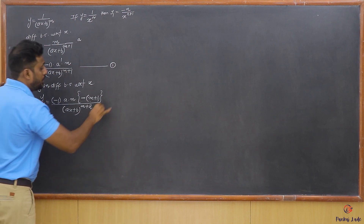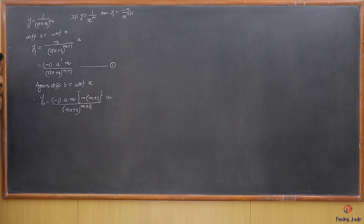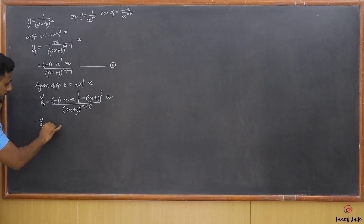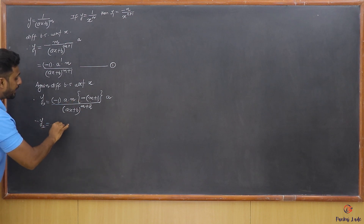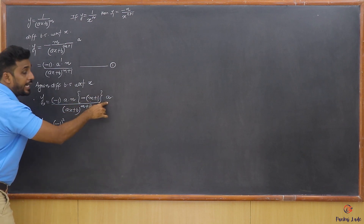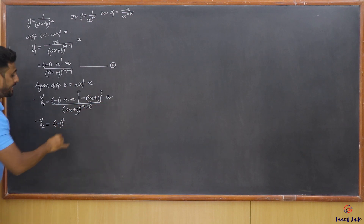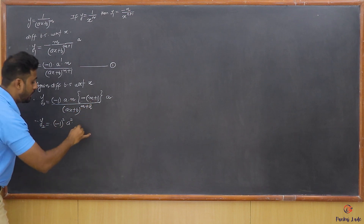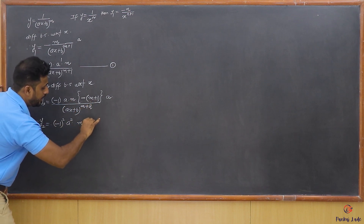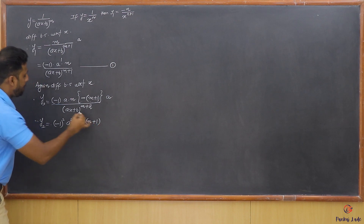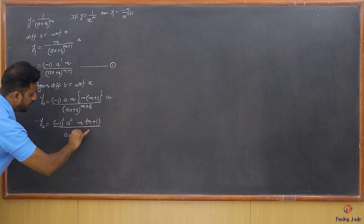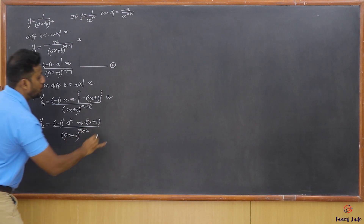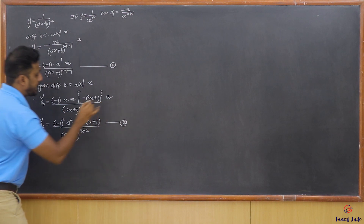Again, differentiate ax+b to get a. Now let's generalize: we have two negative signs, so we write (-1)^2. Then a · a = a^2. Then m · (m+1) in the numerator, and (ax+b)^(m+2) in the denominator. This is the second relation: y2 = (-1)^2 · a^2 · m(m+1) / (ax+b)^(m+2).